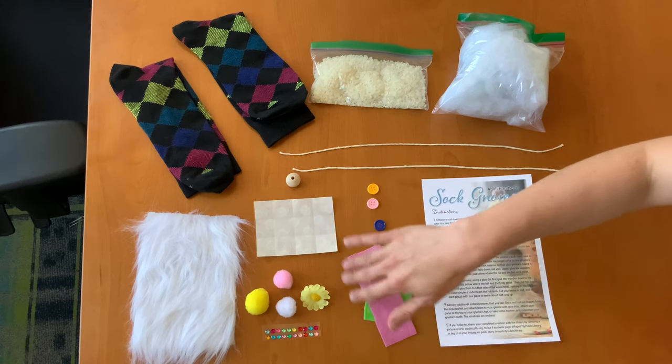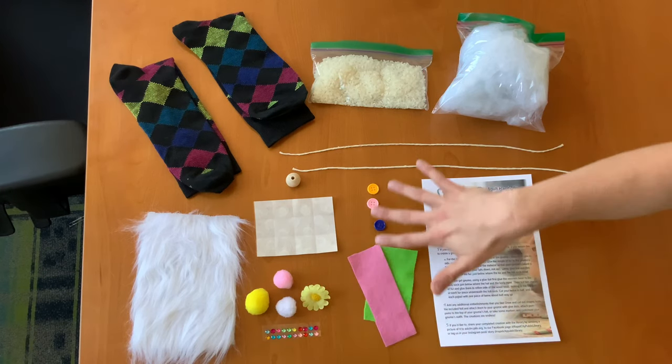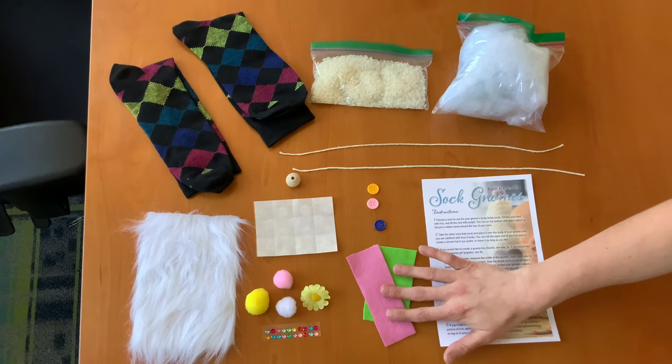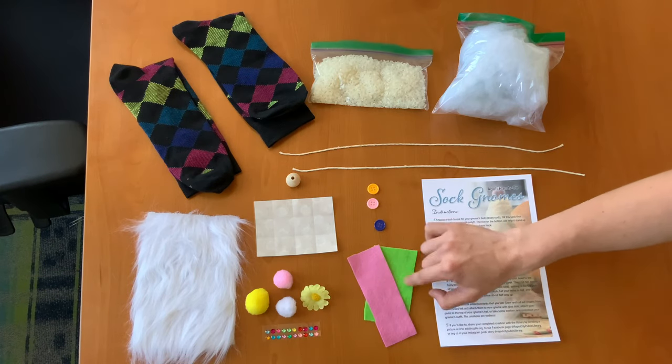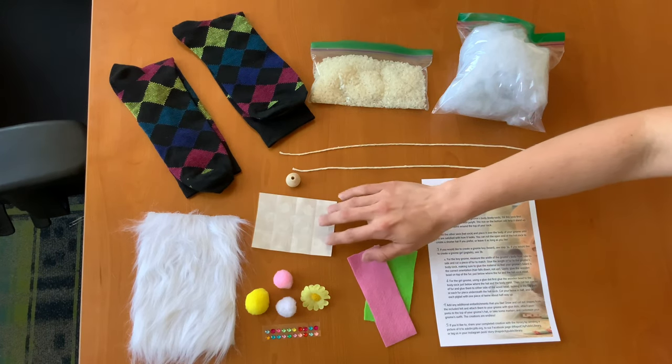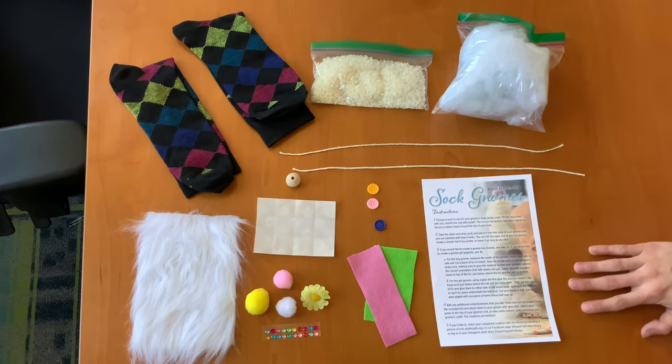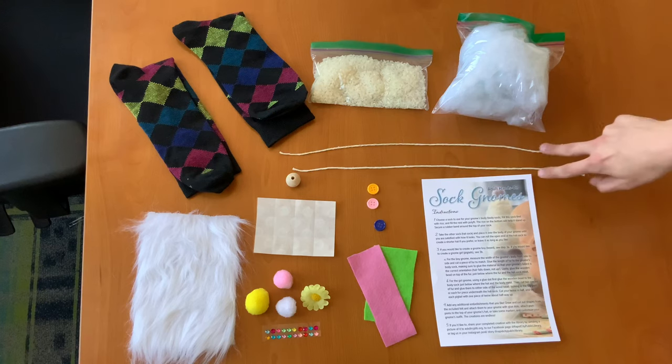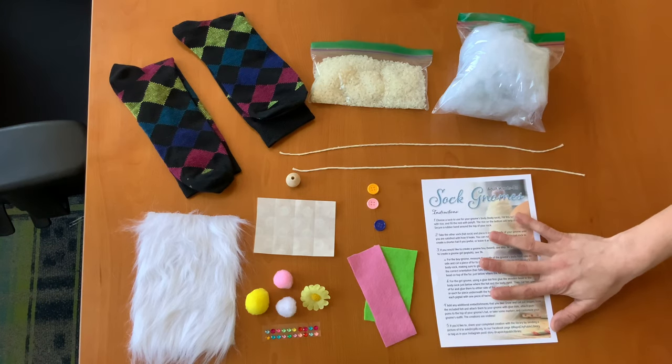And then we have some miscellaneous doodads and decorations for your gnome as well. I included this felt so you can cut out hearts or flowers or any sort of design and you can use those glue dots to attach it to your gnome once it is complete. We also have two pieces of twine and your instructions. Let's get started.